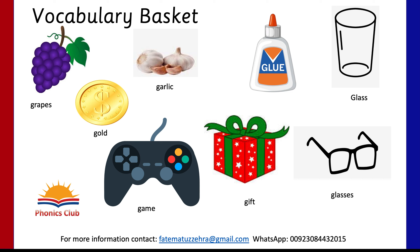This is the idea for introducing things from the vocabulary basket. You can see simple objects you can find at home — gold coin chocolates, which you can find in the market, grapes, garlic, a game, glue, gift, glasses, and glass. The purpose of the basket is that children touch and feel each object and see how it matches with the 'guh' sound.